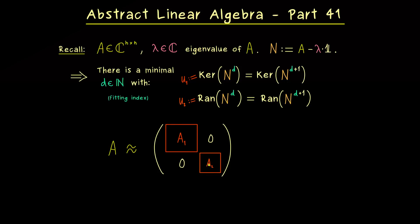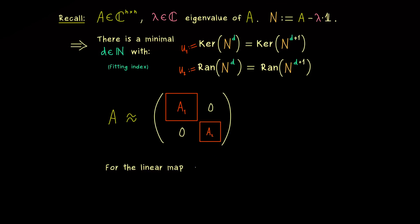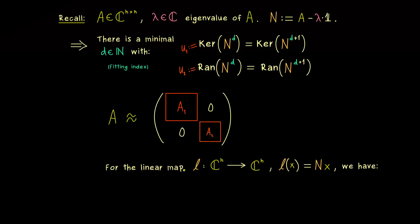To analyze these two matrices, it is helpful to go to the abstract level, which means seeing N as a linear map. So let's say we have the linear map L from the vector space C^n into C^n, given as L(x) = Nx. So N is a matrix representation of the linear map L. Since it is with respect to the standard basis of C^n, there is no real difference between L and N. The obvious advantage is that we can easily restrict L to the subspaces — for example, L restricted to U1, and we know this maps U1 into U1.